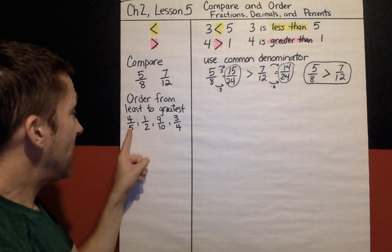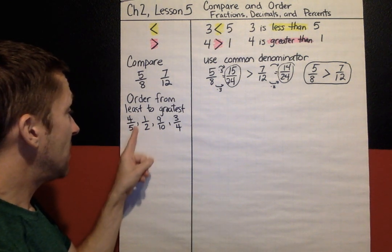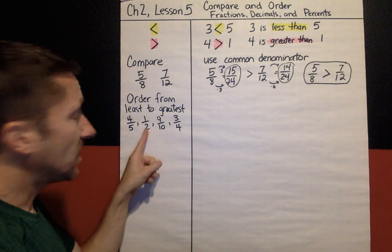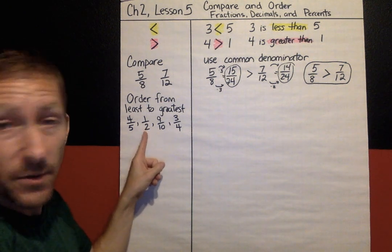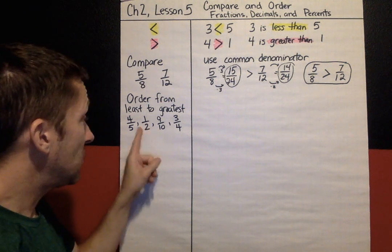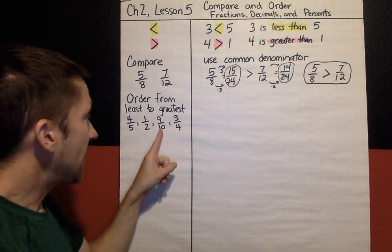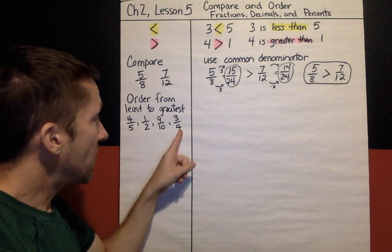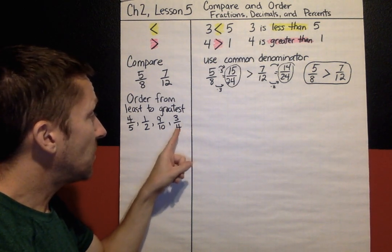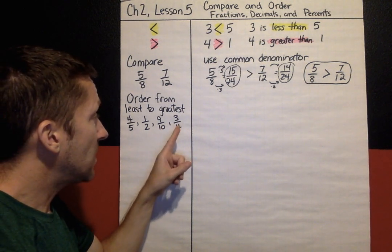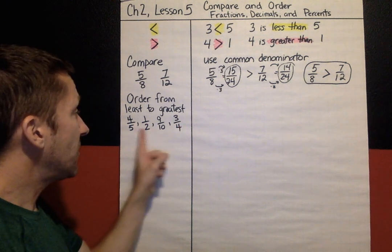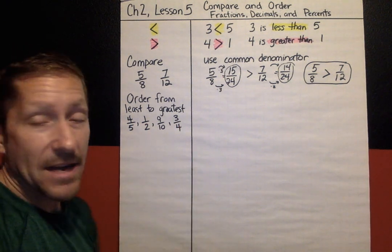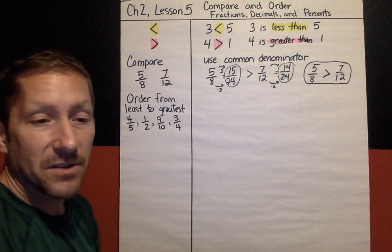If I count by fives: five, ten, fifteen, twenty. If I count by twos: two, four, six, eight, ten, twelve, fourteen, sixteen, eighteen, twenty. If I count by tens: ten, twenty. If I count by fours: four, eight, twelve, sixteen, twenty. My very first match for all denominators is twenty.